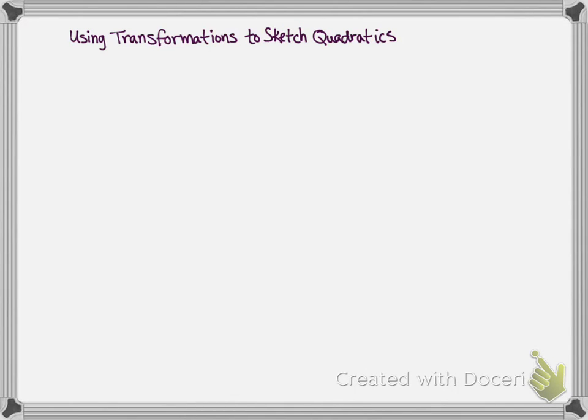Using transformations to sketch quadratic functions. First, let's look at translations, which are shifts. They can be up and down, or left and right.